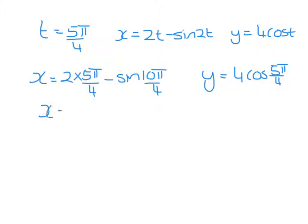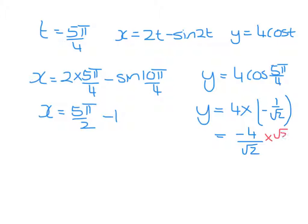So x becomes 5 pi over 2 minus 1, and y is 4 times minus 1 over root 2, which is minus 4 over root 2. I'm going to rationalize the denominator by multiplying top and bottom by root 2, which gives me minus 4 root 2 over 2, which equals minus 2 root 2.